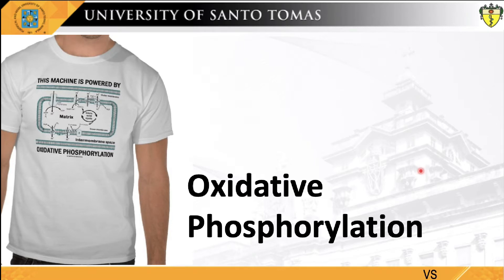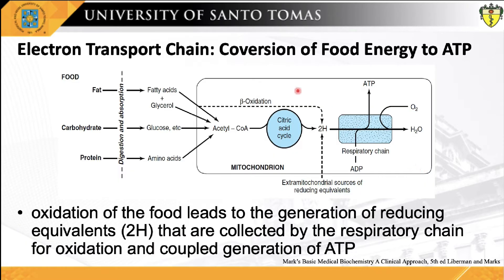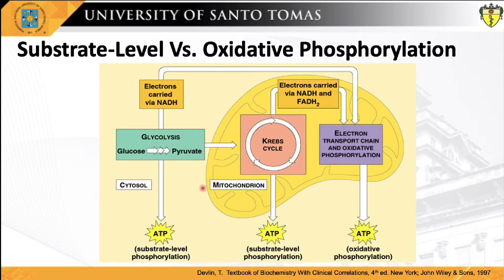Oxidative phosphorylation is the culmination of all energy-yielding metabolism in aerobic organisms. All oxidative steps in the degradation of fats, carbohydrates, and proteins converge at this final stage of cellular respiration, in which the energy of oxidation drives the synthesis of ATP. Simply stated, oxidative phosphorylation involves the reduction of oxygen to water with electrons donated by the oxidation of complex macromolecules, carried by universal electron carriers like NADH and FADH2.